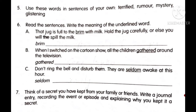For question seven: think of a secret you have kept from your family or friends and write a journal entry recording the event or episode, explaining why you kept it a secret. Write it with four paragraphs as discussed previously in Blocks 3 and 4. You can read the sample journal entry on page number 26 and, based on that, write your journal entry with an introduction about that particular person and your relation with them.